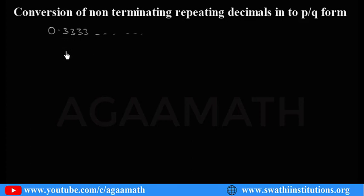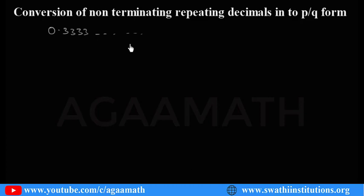What is the periodicity here? Periodicity means how many digits are repeating. Period is three — so only one digit is repeating. Here, periodicity is one.